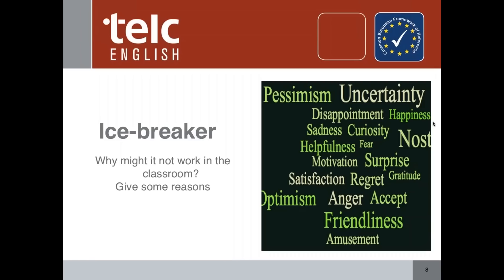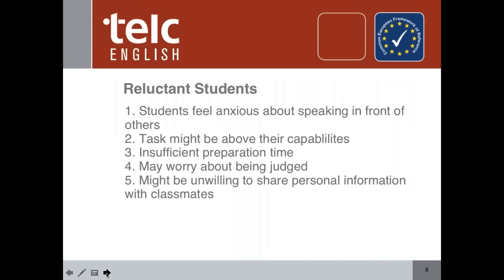Here are some of the points I created, though there are many more. Students might feel anxious about speaking in front of others — you're asking something a little bit personal or emotional and they have to speak in front of a group. The second thing could be: the task itself might be above their capabilities. That's where I'd consider the young learners — it might just not be cognitively within their capabilities.